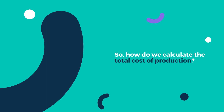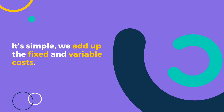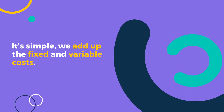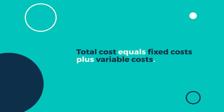So, how do we calculate the total cost of production? It's simple — we add up the fixed and variable costs. Total cost equals fixed costs plus variable costs.